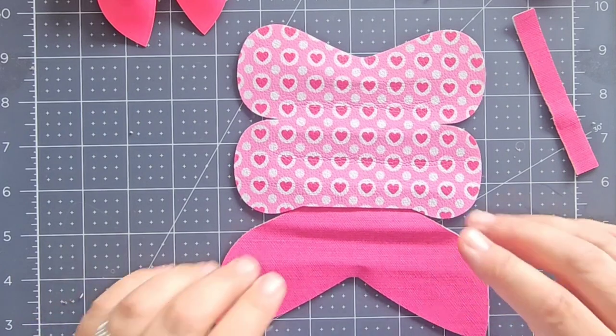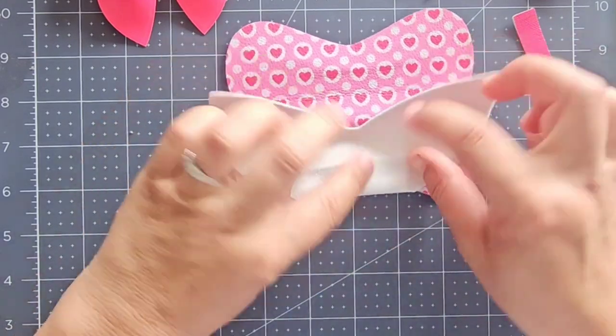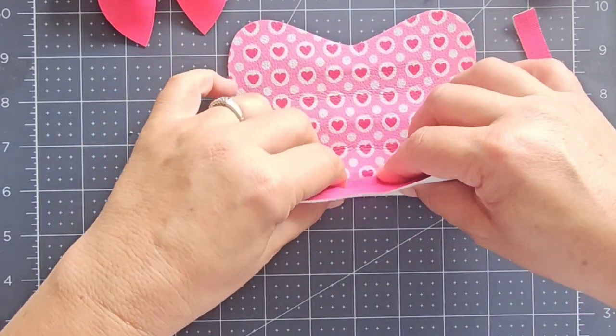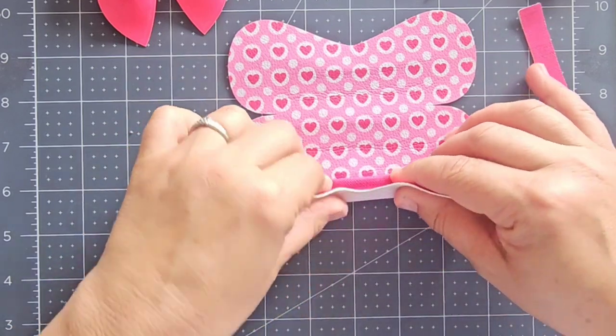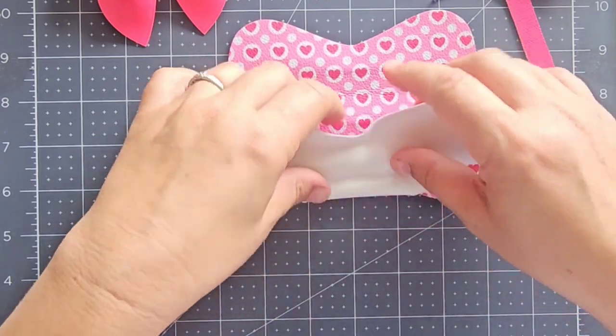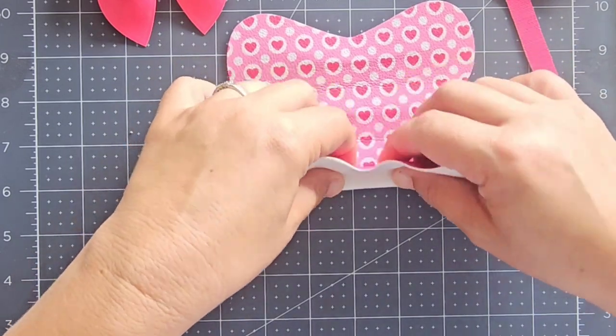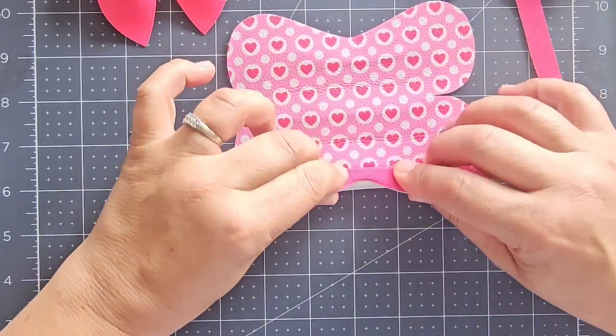I'm going to start folding the tail. There's four folds, so you're going to go forward one, back one, forward another one, and then back again. Okay, so one, two, three, four.